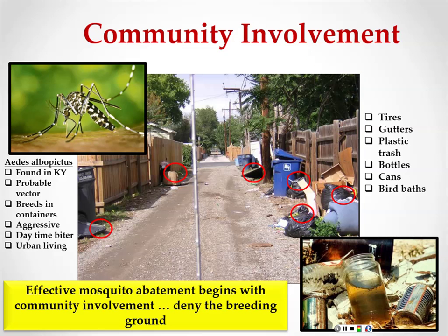We really need the community's help in preventing mosquito breeding. Standing water doesn't need to be large — mosquitoes can breed in just a bottle cap full of water. They're truly urban-living mosquitoes. Check around your house for any standing water and dump it out: clogged gutters, kids' toys, old tires. This community action is one of the best ways to prevent the spread of any mosquito-borne illness.